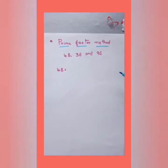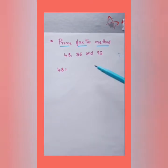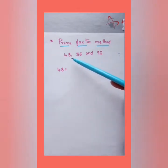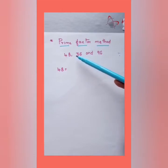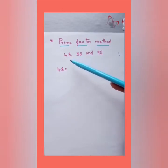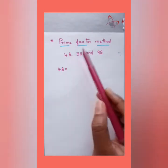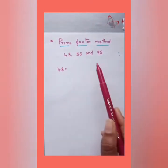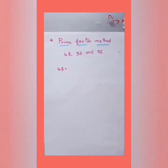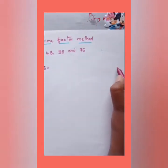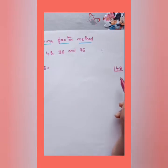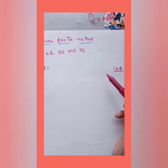Now we move to the next method — the prime factor method — to verify the answer using the same numbers: 48, 36, and 96. To find the HCF, we first need to find the prime factors of each number. Prime numbers are those divisible only by 1 and themselves. We begin with the smallest prime number, which is 2.